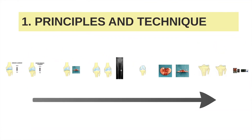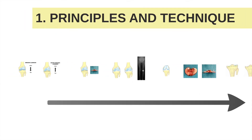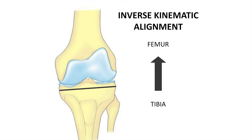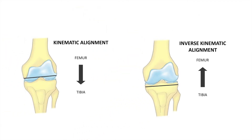Inverse Kinematic Alignment is a patient-specific alignment concept for TKA. The main feature is a patient-specific tibial resection parallel to the tibial joint line — the same amount of bone is resected on the medial and lateral tibia, a so-called resurfacing of the tibia. The femoral resections are then adapted to balance the knee, and no soft tissue releases are performed. This is actually the inverse of Kinematic Alignment, where the femur is resurfaced first and the tibial resection is adapted to balance the knee.